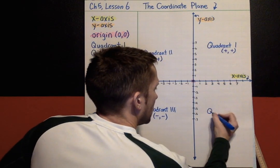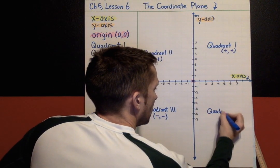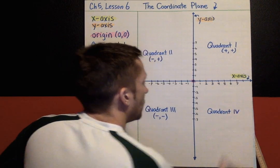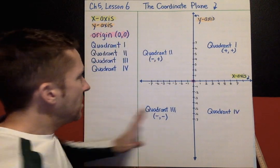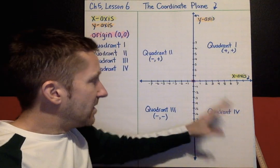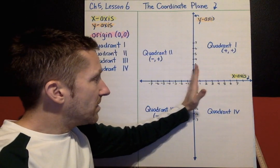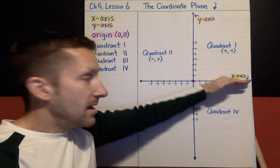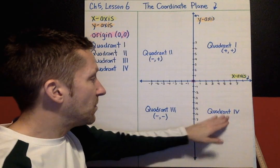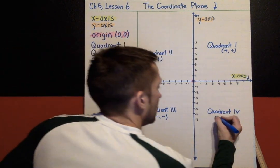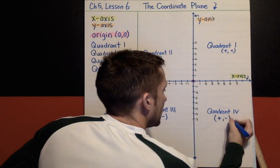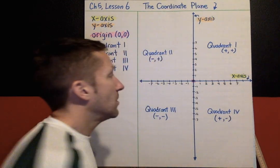And the last one — quadrant four. If I start at the origin, the way I get into quadrant four is a positive x-coordinate and then a negative y-coordinate. That puts me into quadrant four. So quadrant four is a positive and a negative ordered pair.